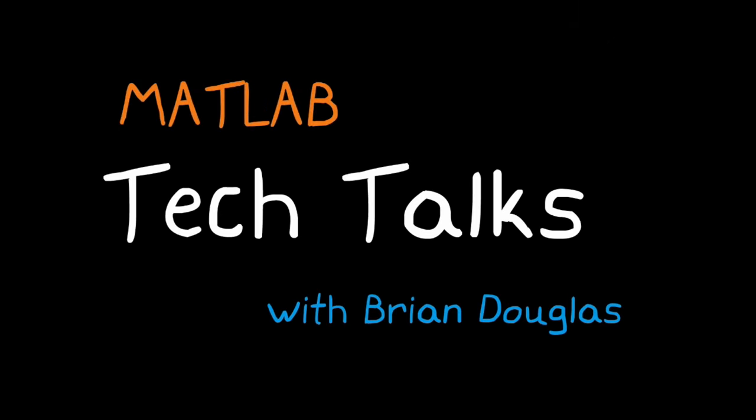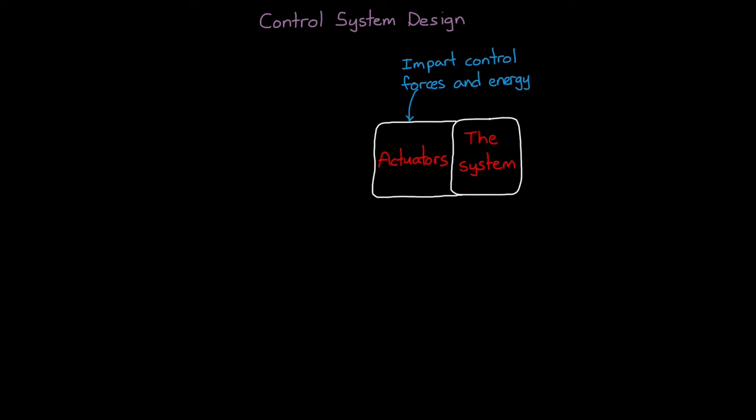I'm Brian, and welcome to a MATLAB Tech Talk. To begin, let's look at what control system design requires at a very high level. It starts with the system that you want to control. And you're able to poke and prod the system with actuators that impart control forces and energy. And then you can measure specific states of the system like voltage, position, and temperature with sensors that produce the output of the system.